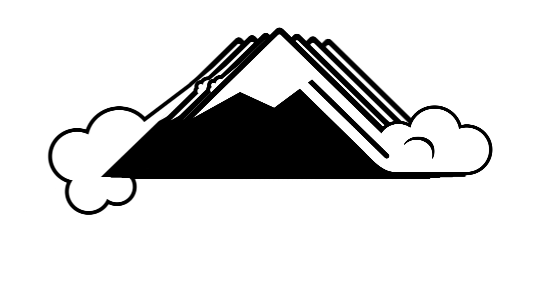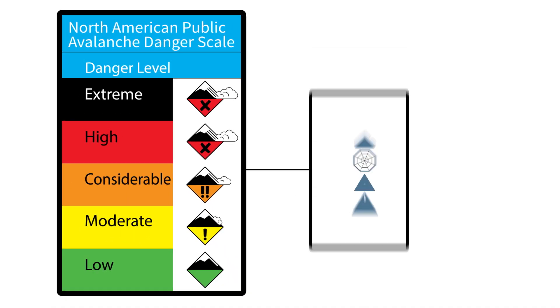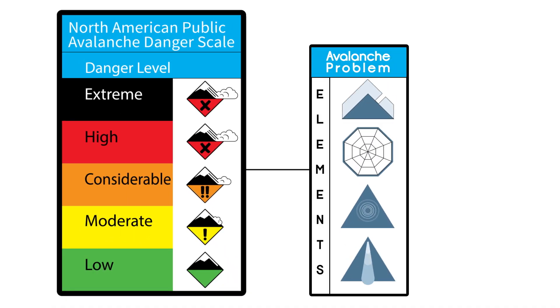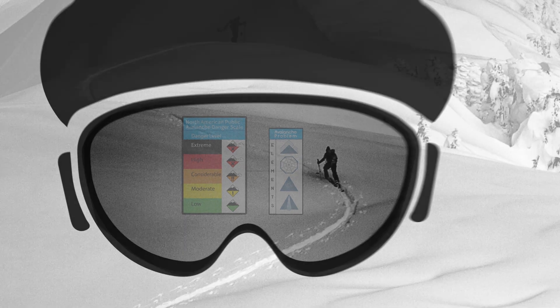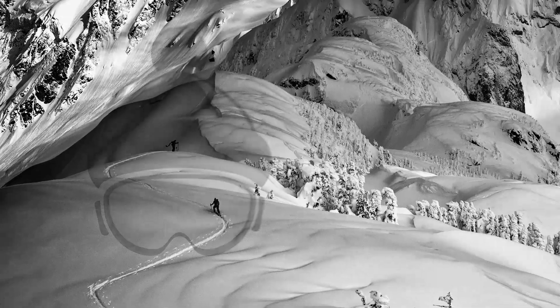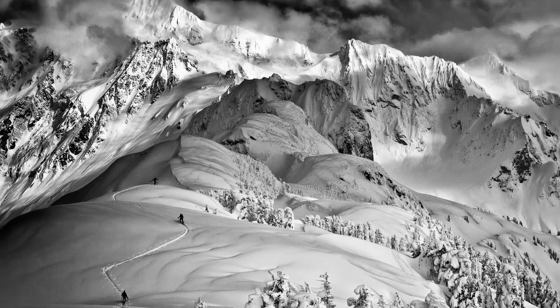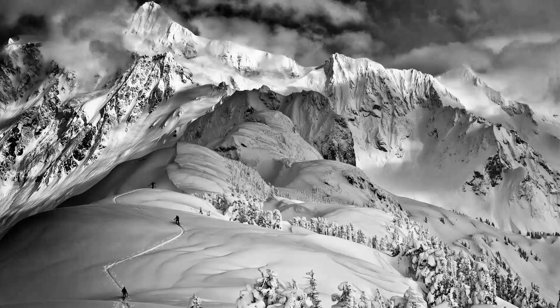The avalanche danger is a broad brushstroke of daily conditions. Avalanche problems are an extension of the danger scale and allow you, the traveler, to better visualize the danger and make decisions based upon the kind of avalanche you may encounter.